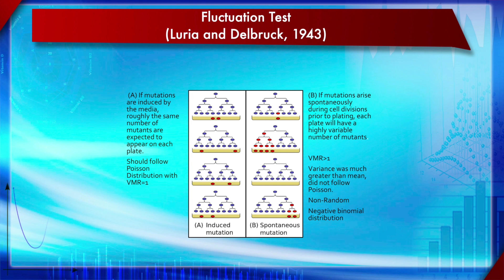A halo represents bacterial clearance — bacteriophage-resistant bacteria can grow on the phage plate, while non-resistant bacteria are killed by the phage virus. In the second scenario — if resistance is due to pre-existing mutations — you would see extreme variation across plates: some having zero colonies and others having many. All you need to check is whether the data is normally distributed or not normally distributed.